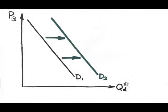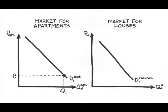What about changes in related markets? For example, take a look at the link between the market for apartments and the market for houses. Initially, the price of a typical apartment is P1. Q1 apartments get rented, and there's some demand in the related market for homes.